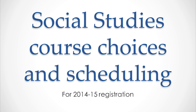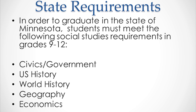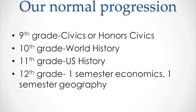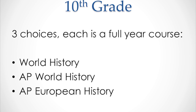In social studies, the state requires that students meet five standards: civics or government, US history, world history, geography, and economics. The normal progression is: ninth grade — civics, meeting the government requirement; 10th grade — world history; 11th grade — US history; and 12th grade — economics and geography. If you are going into 10th grade, you have three choices for your world history course: regular world history, AP world history, or AP European history.